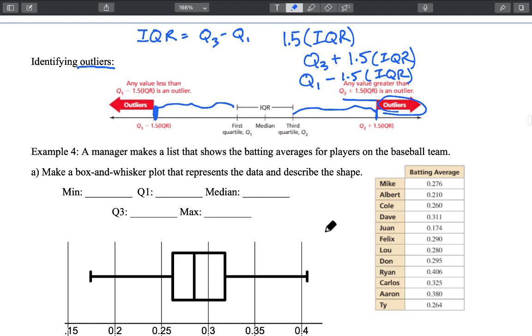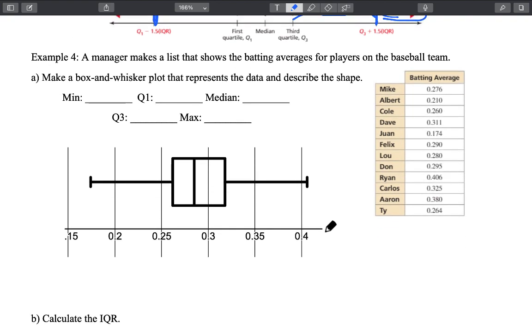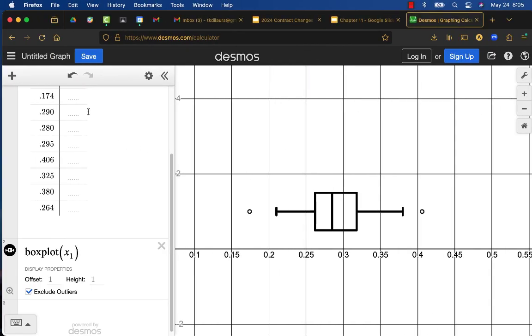So let's take a look at this example and this is the example that I've calculated into Desmos. A manager makes a list to show the batting averages for the baseball players on the team.